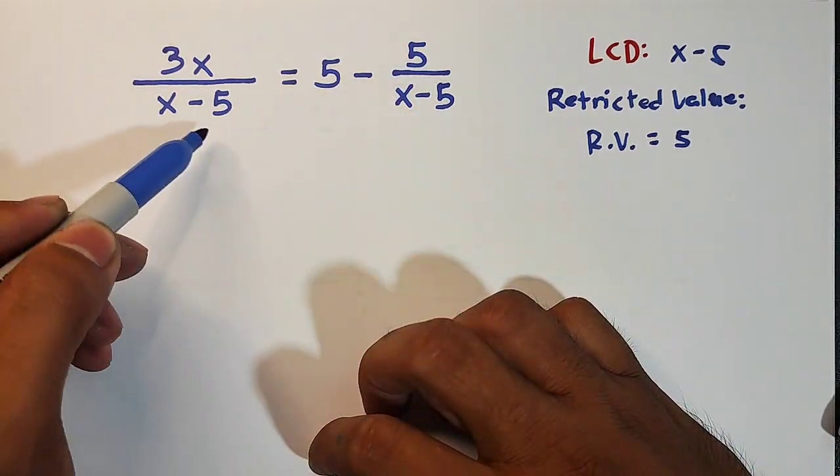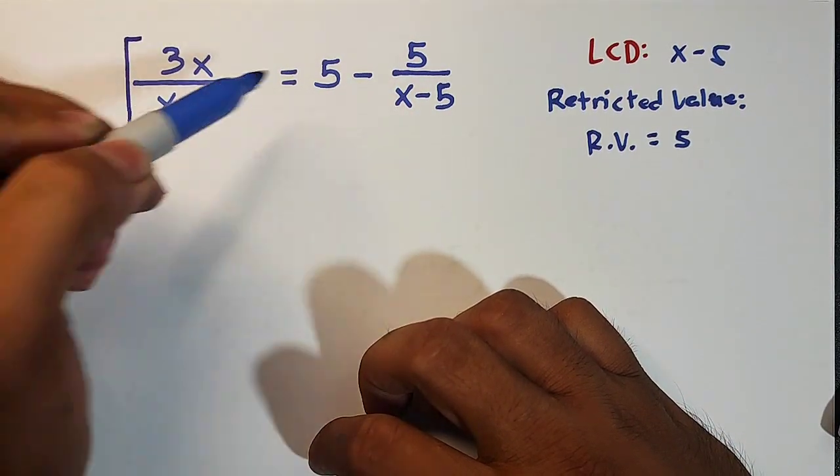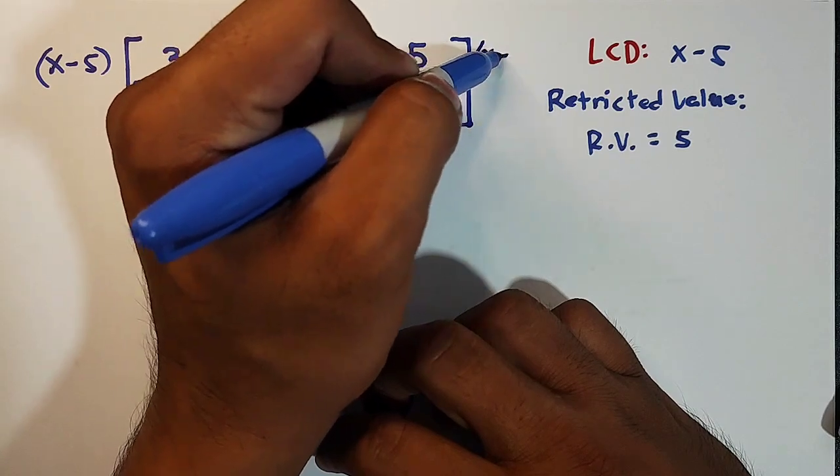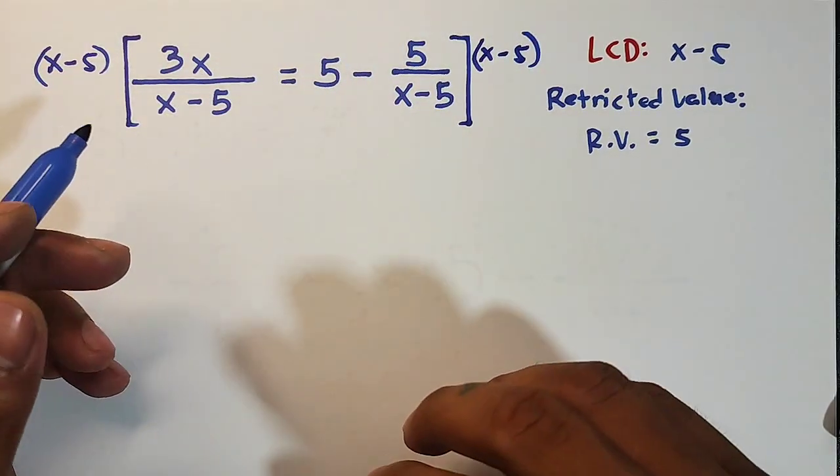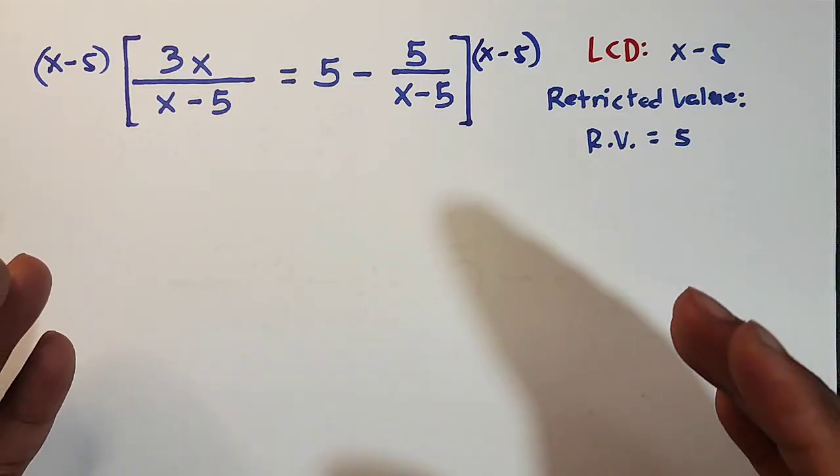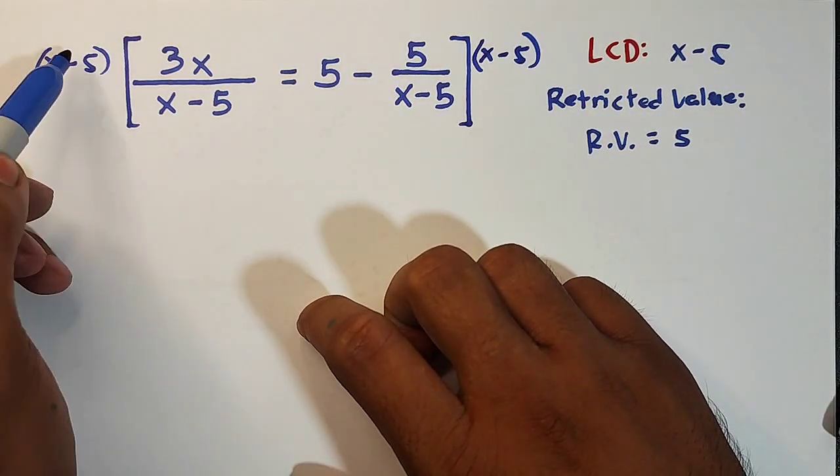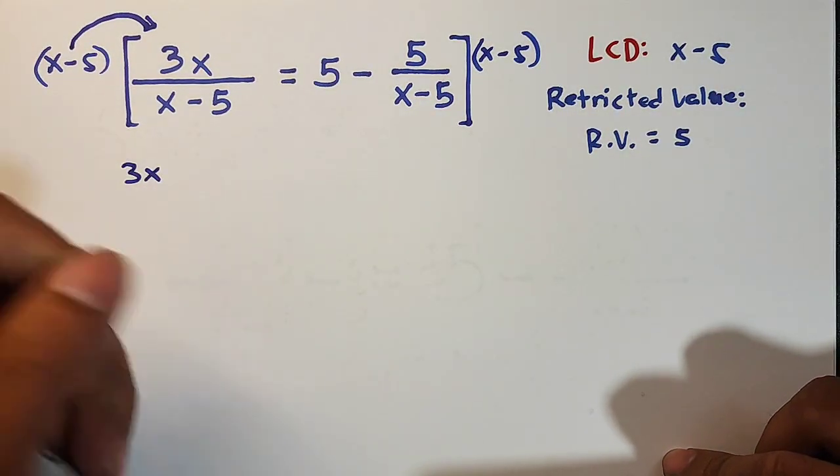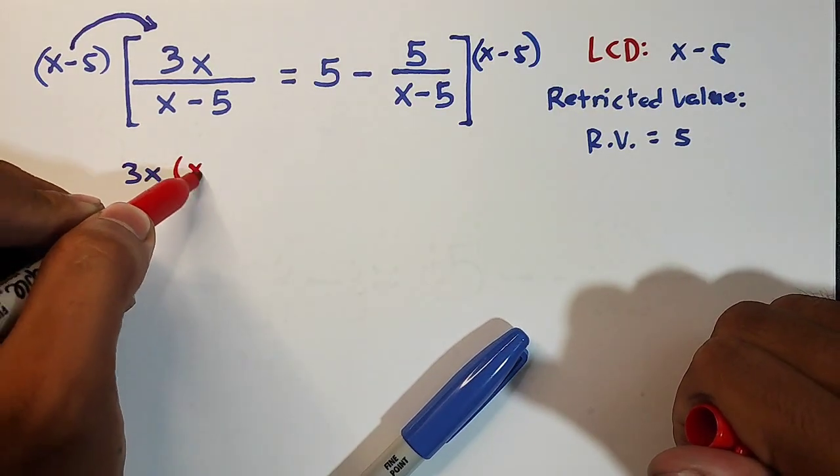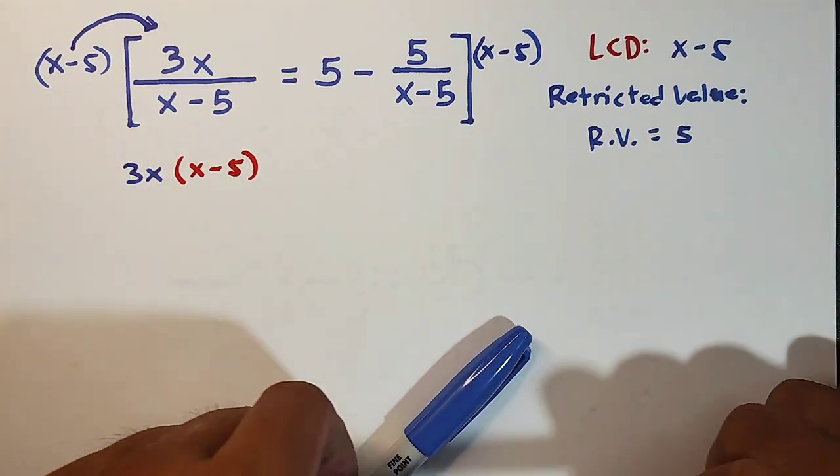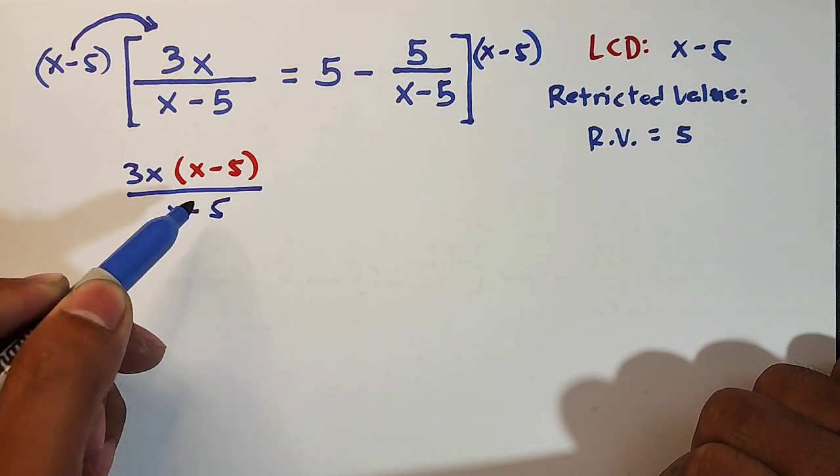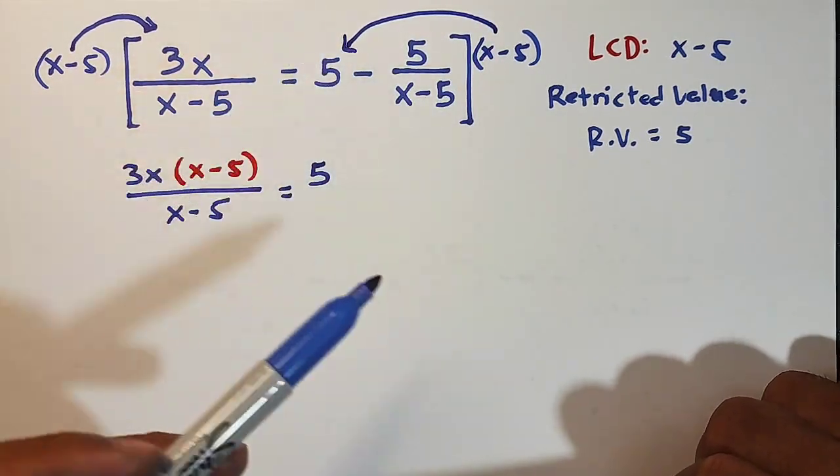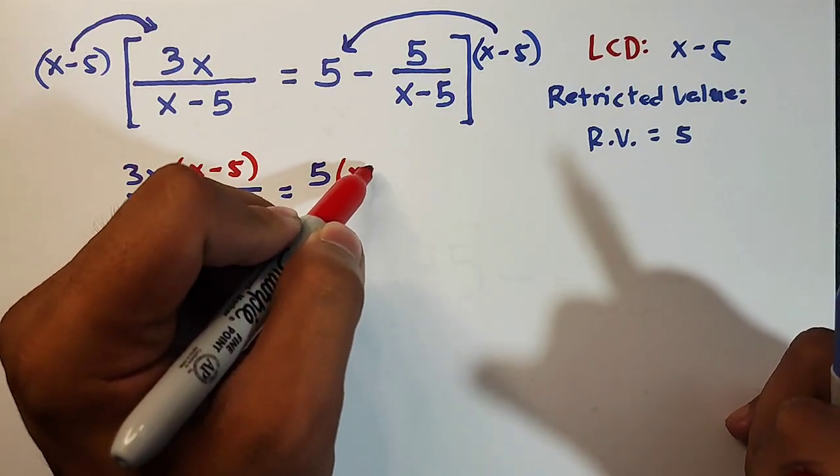Now, let's use LCD to eliminate this denominator by simply multiplying your whole equation by x minus 5. When I say whole equation, close your parentheses or bracket and then multiply it both sides. Here, this will become 3x times x minus 5 over x minus 5 is equal to 5, then multiply here to your whole number, it will become 5 times x minus 5.